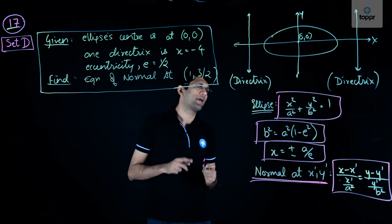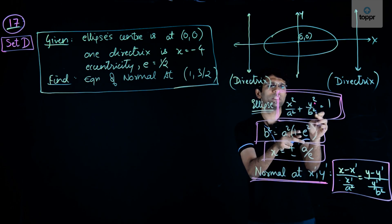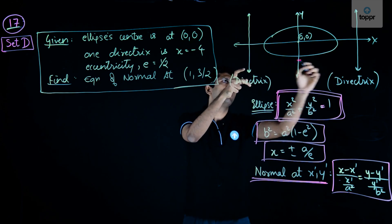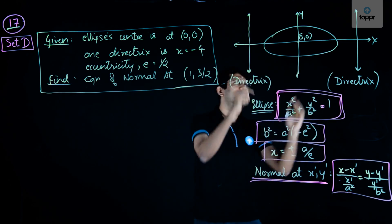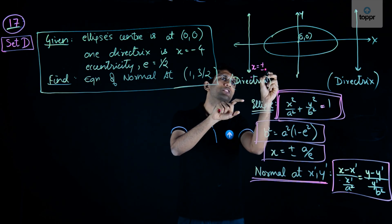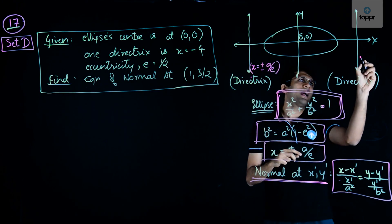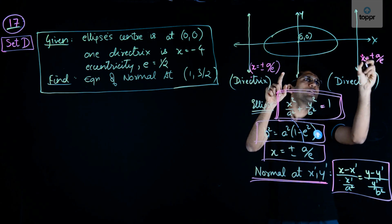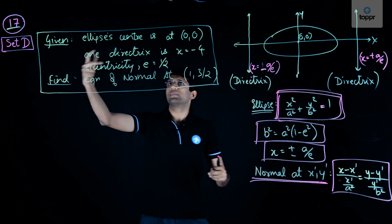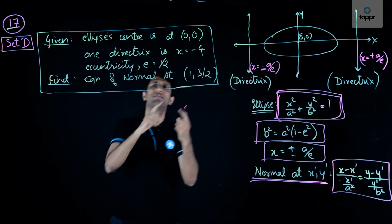To find a² and b², notice the ellipse is a standard ellipse with equation x²/a² + y²/b² = 1. For such a standard ellipse, the equation of the directrix is x equals plus or minus a/e. The left directrix is x = −a/e and the right is x = +a/e. We are given that the directrix is x = −4, so equating gives us a/e = 4.